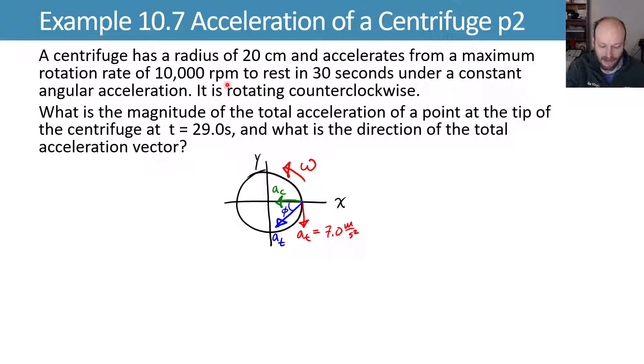It's going opposite the direction of my motion because we're slowing down. It says accelerating, but we're going from 10,000 rpm to rest. So that acceleration is a slowing down. It's opposite the motion. From before, we know that my tangential acceleration and centripetal acceleration have values as shown, and we can combine them using this vector sum.